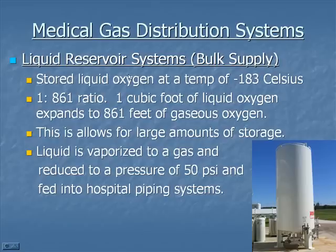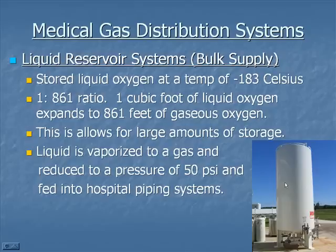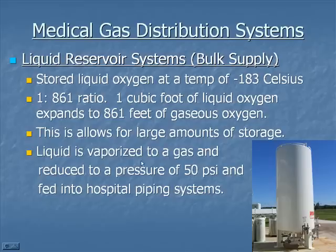Some trivia-type questions related to liquid oxygen: it's stored at negative 183 degrees Celsius. It has a 1 to 861 ratio — one cubic foot of liquid oxygen expands to 861 cubic feet of gaseous oxygen. That's an advantage because you're able to store a lot of liquid oxygen, which will then expand to an extremely large quantity of gaseous oxygen, as compared to storing oxygen in a tank where you don't have a large reserve.